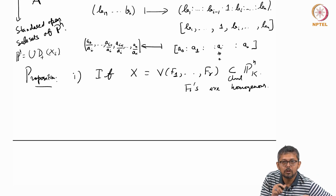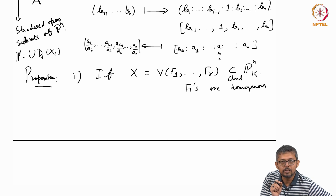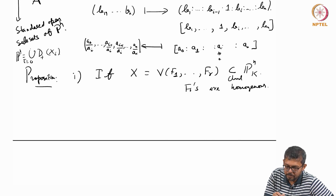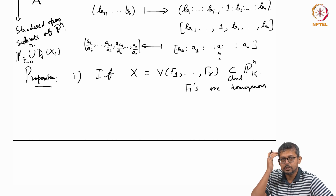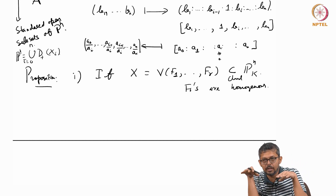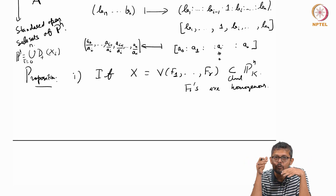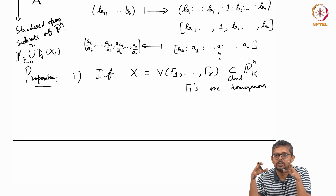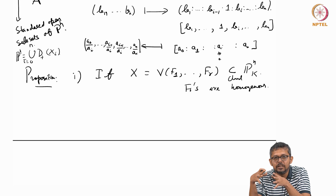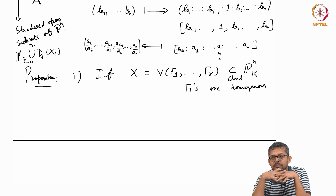By the way, P^n can be written as the union of D+(x_i) for i = 0 to n. Any point will be nonzero somewhere — in a projective space, [0, 0, ..., 0] is not there. So any point is nonzero at some coordinate, and then it will belong to some U_i. So P^n = union of U_i for i = 0 to n.